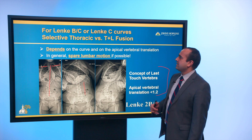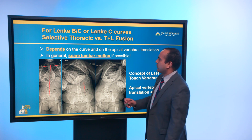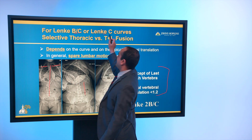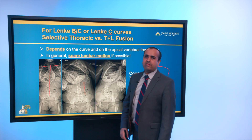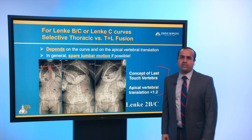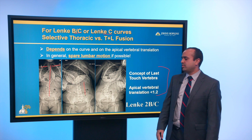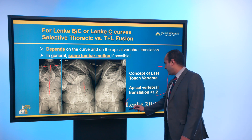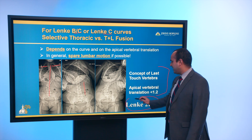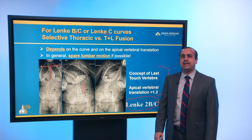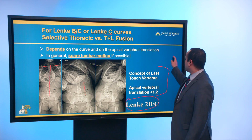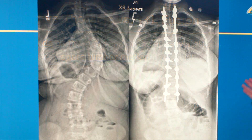These concepts only apply to Lenke 1B/C or Lenke 1C curves where the lumbar curvature is an issue. In our patient, I would classify her as a Lenke 2BC, and therefore we decided to do a selective thoracic fusion.